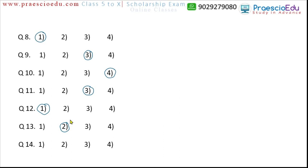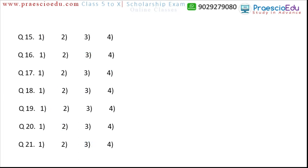Question 14: Jeshtha, Shravan, Kartik, and Vaishakh. Kartik is a shorter month compared to the others, with around 30 days, making it different. So option three, Kartik, is the answer. Question 15: Sukhvinder, Jasvinder, Parvinder, Balvinder. Based on alphabetical counting, Sukhvinder (option one) is the different one.